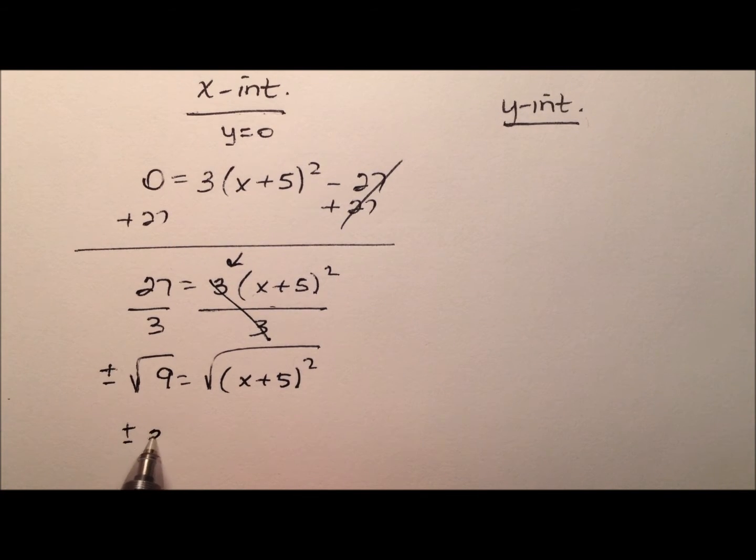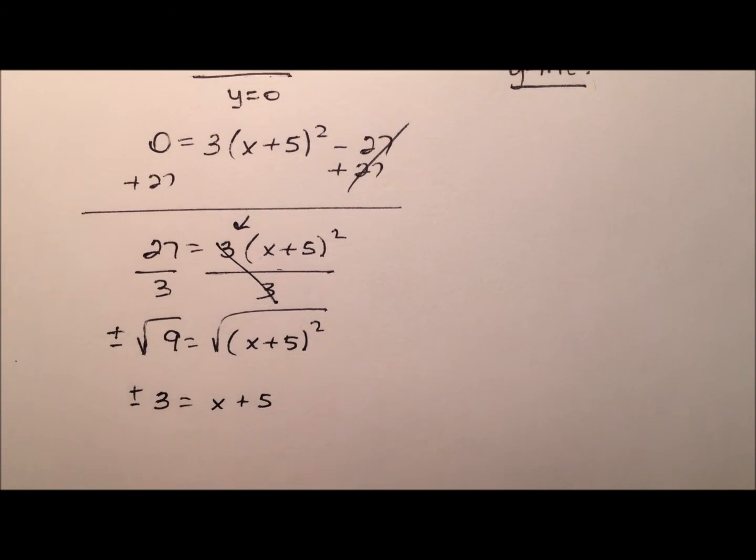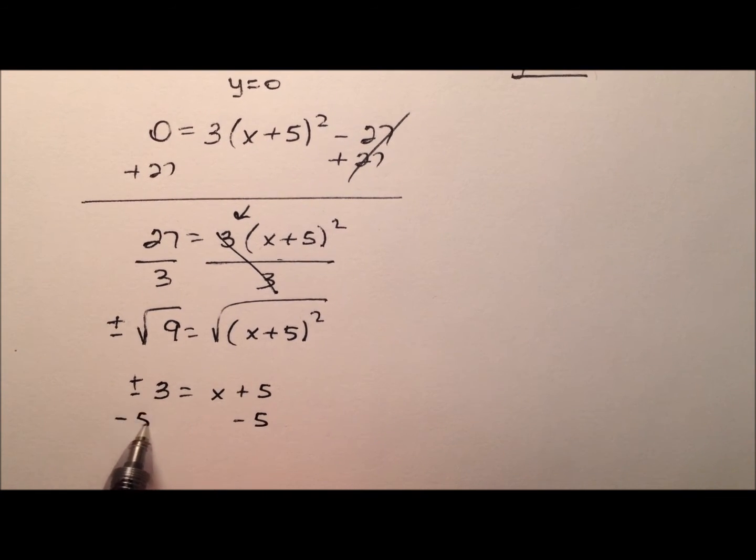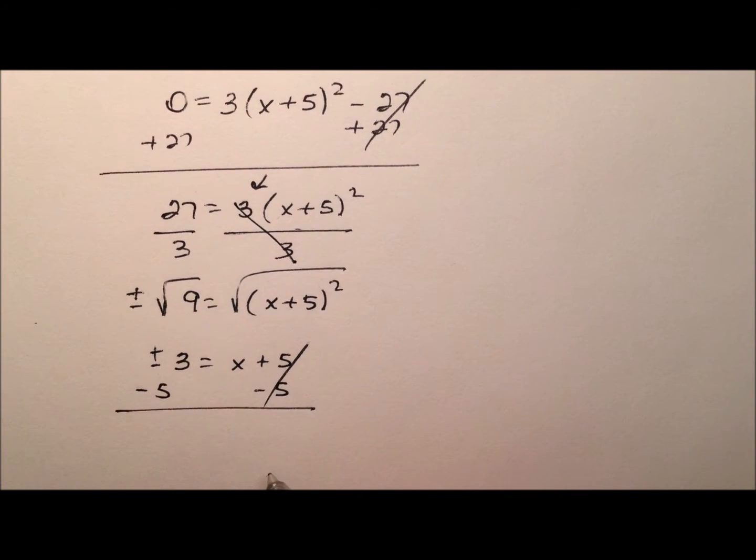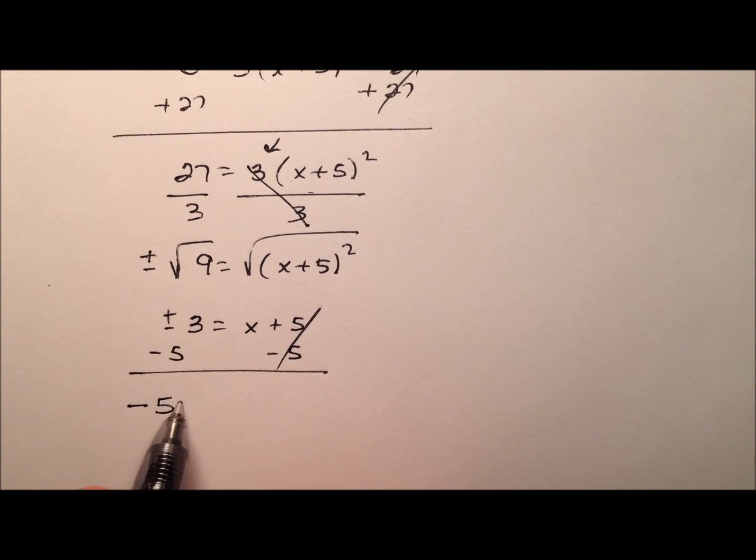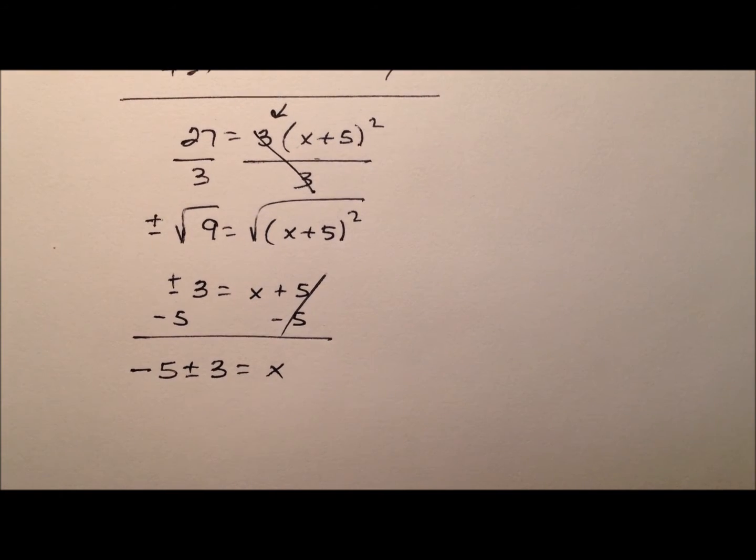So we'll have a plus or minus 3, and then over here on the right it will be x + 5. So let's minus 5 from both sides, and it looks like we'll have a -5 ± 3 equals our x values.